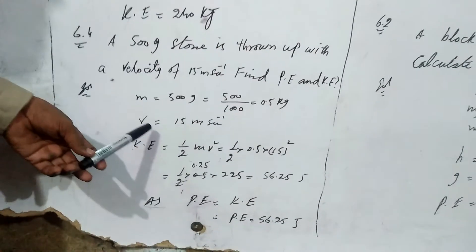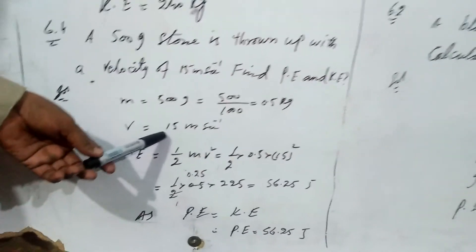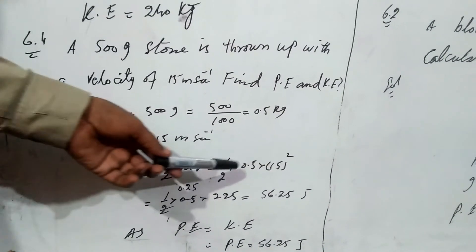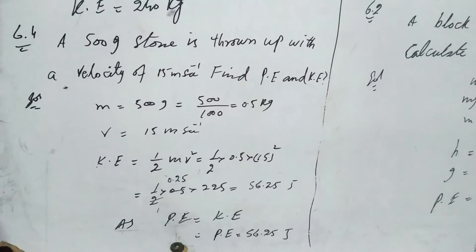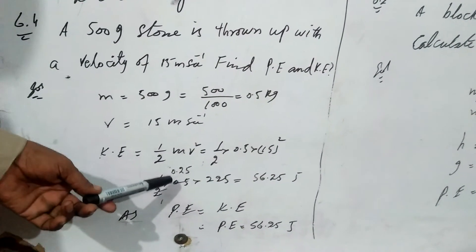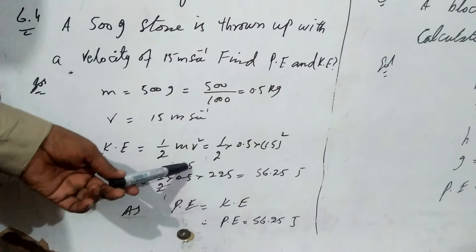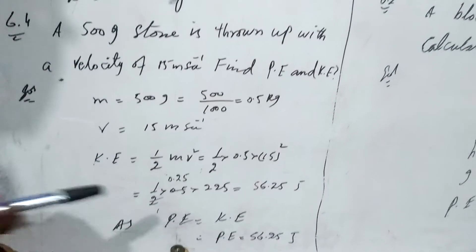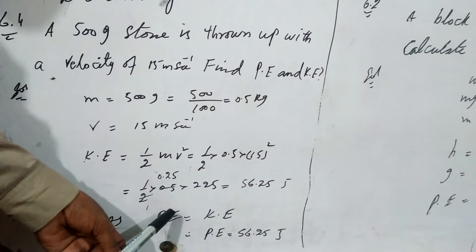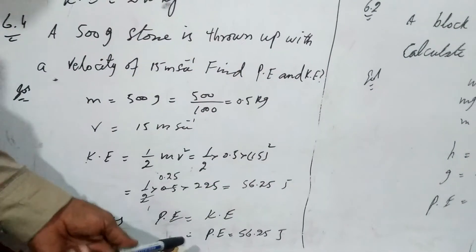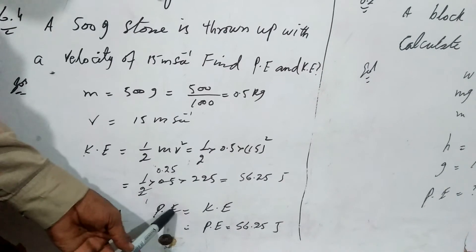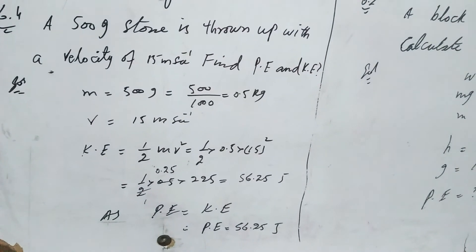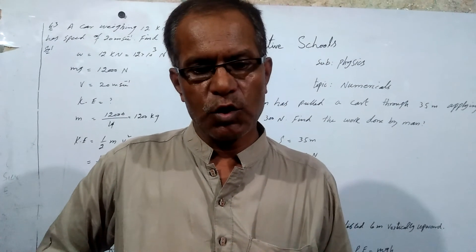Kinetic energy: half mv squared. Half times 0.5 times 15 squared, which is equal to 125. 5 multiplied by 0.25, we get 56.25 joules. As potential energy and kinetic energy are equal due to interconversion of energy, so potential energy is also equal to 56.25 joules.